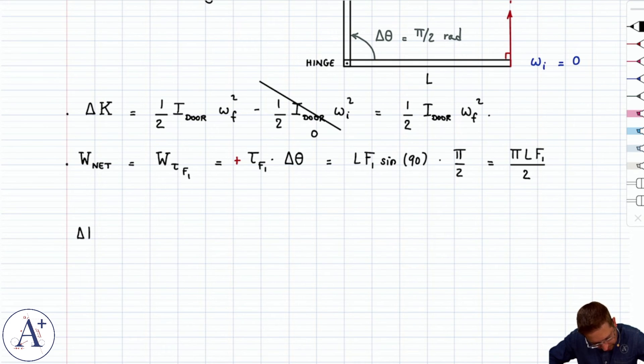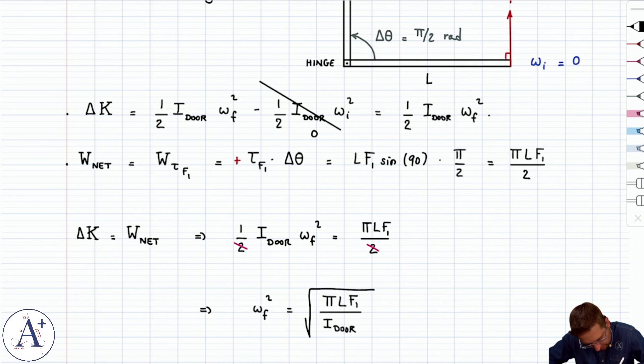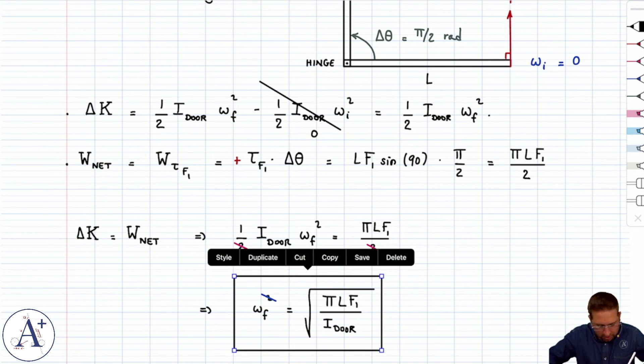If I write that delta K is equal to work net, then I get one-half I door omega final squared is equal to pi L F1 over 2. This is going to clean up a bit, the twos are going to go away, and we're going to get omega final squared is equal to pi L F1 divided by I door. We're going to square root that to get omega final is square root of pi L F1 divided by I door, the moment of inertia of the door.